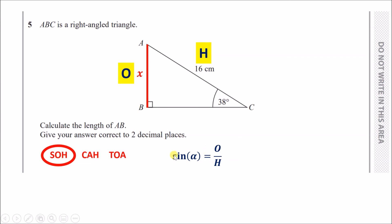Because we have O and H, look at SOH CAH TOA. Which one has O and H? SOH has that. The formula is sine of the angle equals opposite over hypotenuse. Fill in the information: the angle is 38, the opposite is x, and the hypotenuse is 16.